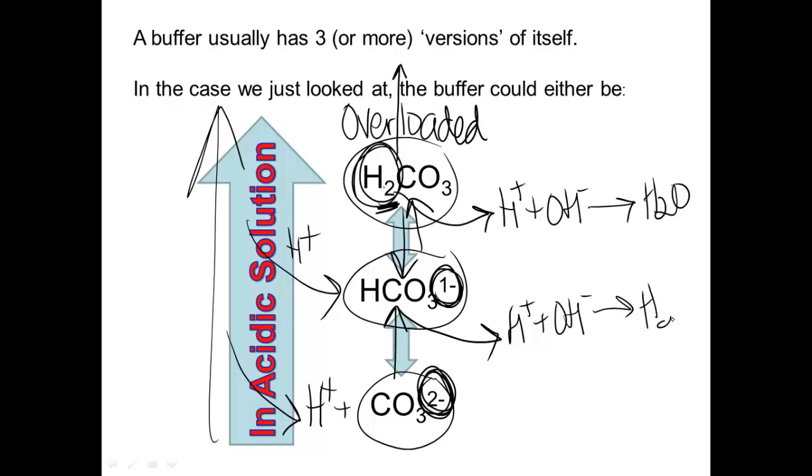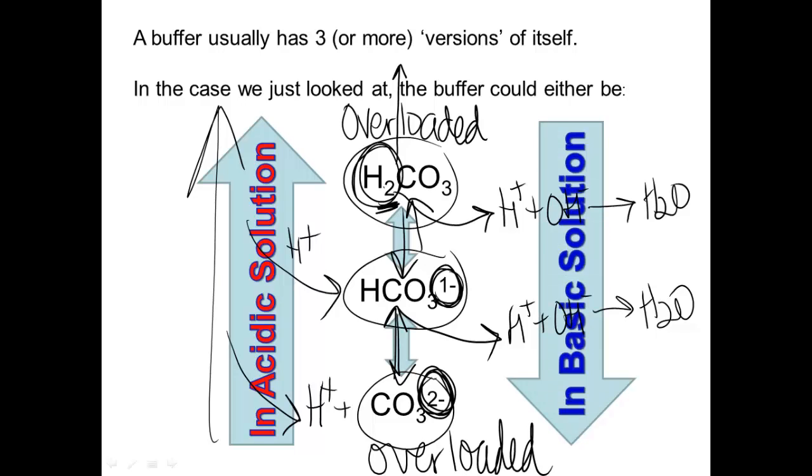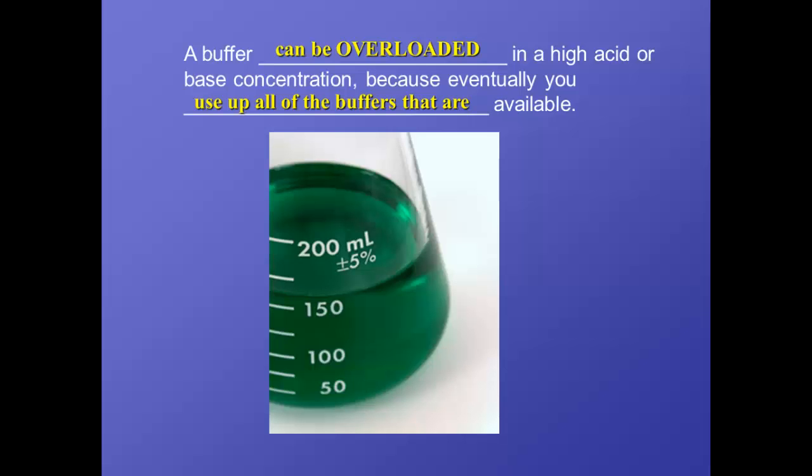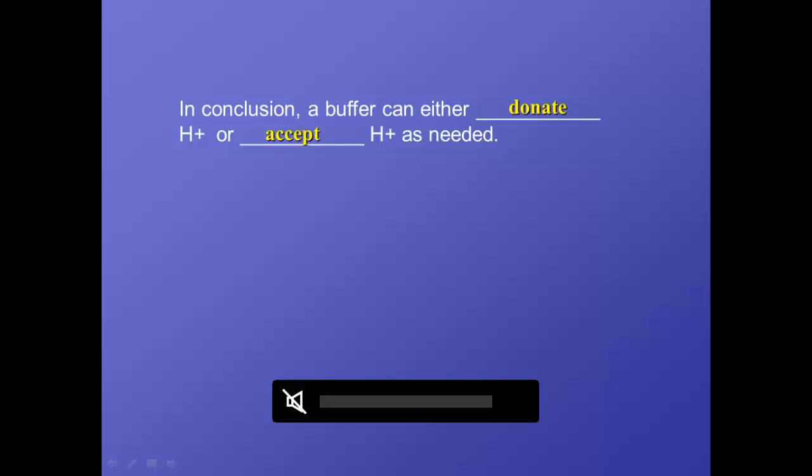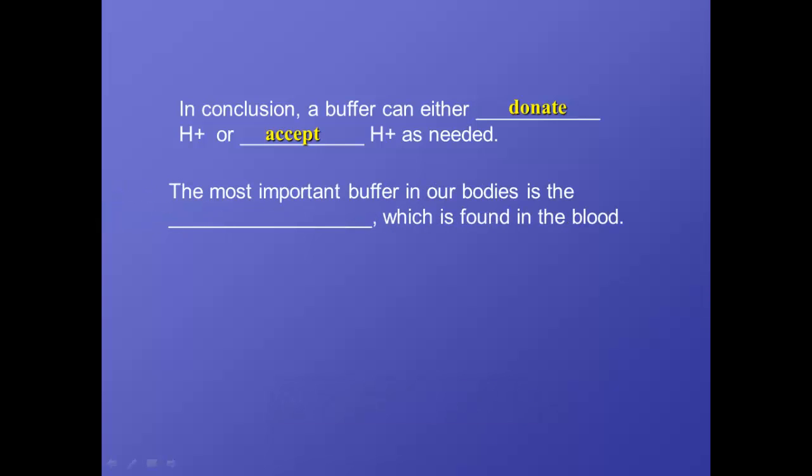Now, it still has a hydrogen to give away, so it'll give that hydrogen away to a base as well. That will turn into the neutral water again. And now, because it's lost another hydrogen ion, it becomes CO3²⁻ 2 negative. Again, it has no more hydrogens to give away, and so we call this form of the buffer overloaded in a basic system because it can't prevent pH changes anymore. So in a basic solution, the buffer system will move from the direction of lots of hydrogens to lots of negatives. So a buffer can be overloaded if there's too much acid or too much base. If you keep adding acids or bases, the pH will definitely start to change. So in conclusion, a buffer can either donate hydrogens, give them away, or it can accept hydrogen ions in acidic solutions.